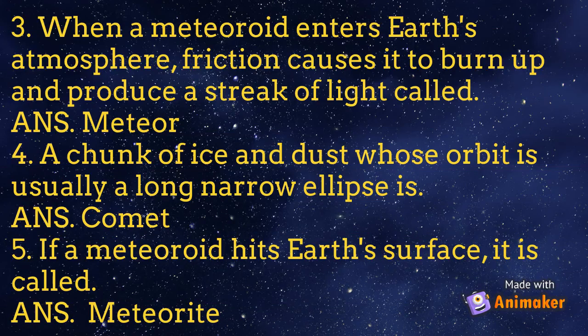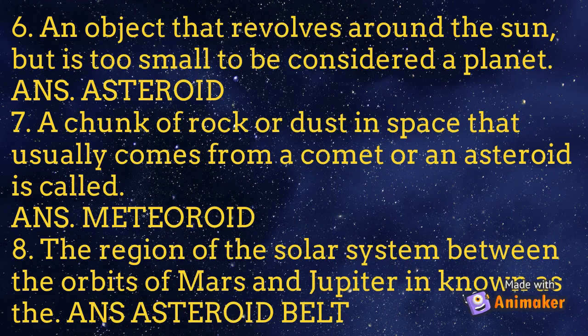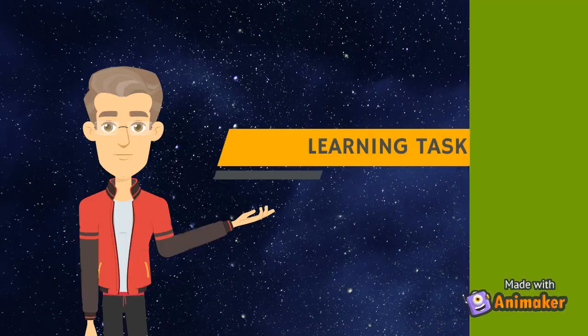Number 3: When a meteoroid enters Earth's atmosphere, friction causes it to burn up and produce a streak of light called — Answer: Meteor. Number 4: A chunk of ice and dust whose orbit is usually a long narrow ellipse is — Answer: Comet. Number 5: If a meteoroid hits Earth's surface, it is called — Answer: Meteorite. Number 6: An object that revolves around the sun but is too small to be considered a planet — Answer: Asteroid. Number 7: A chunk of rock or dust in space that usually comes from a comet or an asteroid is called — Answer: Meteoroid. Number 8: The region of the solar system between the orbits of Mars and Jupiter is known as the — Answer: Asteroid Belt.